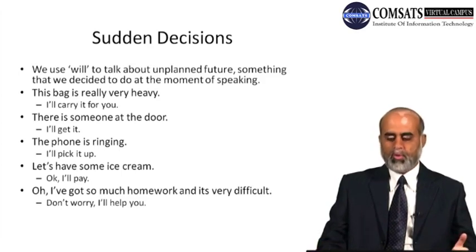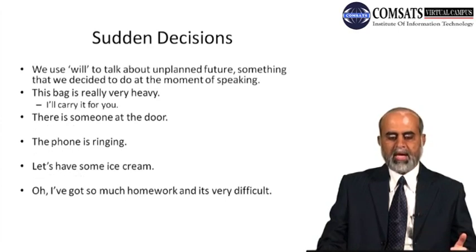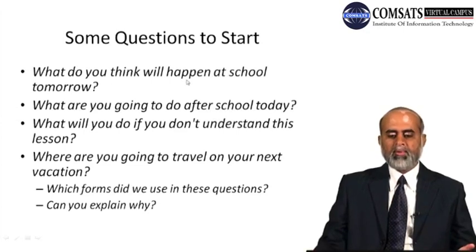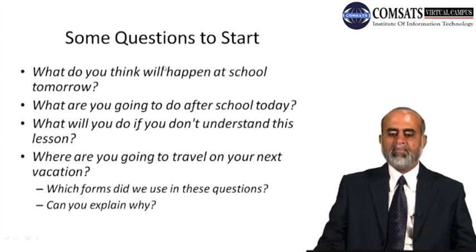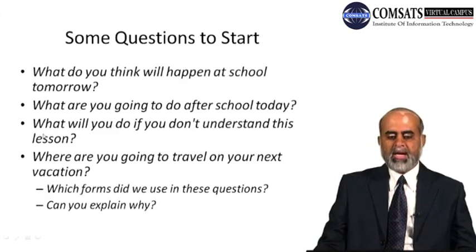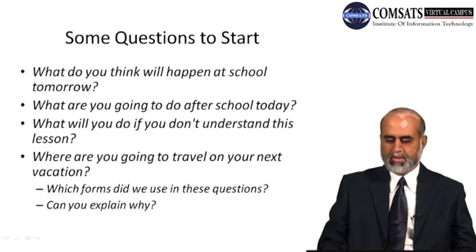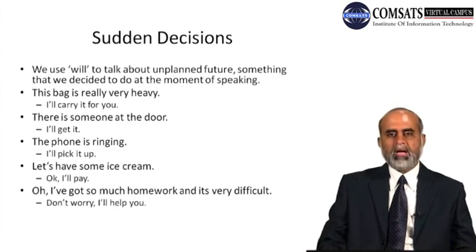Now, going back to the previous questions: 'What do you think will happen at school tomorrow?' — this is something you have not planned because you don't know what will happen, so you will suddenly think about it. It is an unplanned future — you predict about the future and it is a sudden prediction. That's why we use 'will' here. Similarly, 'What will you do if you don't understand this lesson?' — again, you have not planned; if this situation arises, you suddenly decide what your action will be. We use 'will' for sudden decisions.